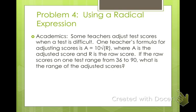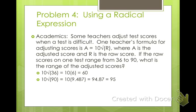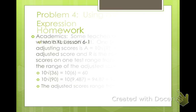Some teachers adjust test scores when a test is difficult. One teacher's formula is a equals 10 times the square root of r, where a is the adjusted score and r is the raw score. If raw scores range from 36 to 90, we plug in each to find the range of adjusted scores. 10 times the square root of 36 equals 10 times 6, which is 60 — so a 36 becomes a 60. And 10 times the square root of 90 is about 10 times 9.487, which is approximately 95. So the new score range is 60 to 95.